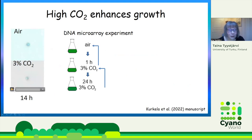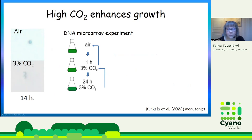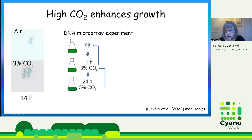We show a 14-hour video of cells grown in ambient air and in high CO2 — these are just the control strain cells. We made DNA microarray experiments where we transferred cells from ambient air to high CO2 for one hour and 24 hours, then compared gene expression in the one-hour samples to those in ambient air, and the 24-hour samples to those in one hour in high CO2.